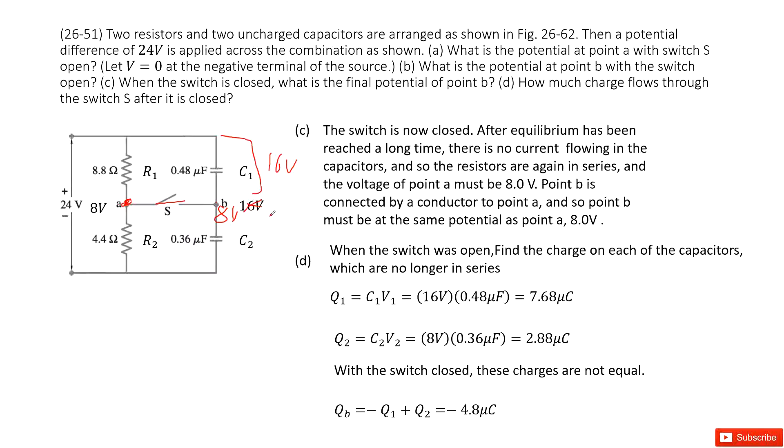So now we can see capacitor for C2 is 8 volts. This is we justified. Now we can see the charges for Q1 and Q2 are separate. So we can find the charges on each of the capacitors.